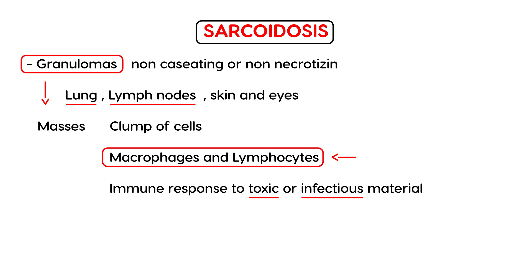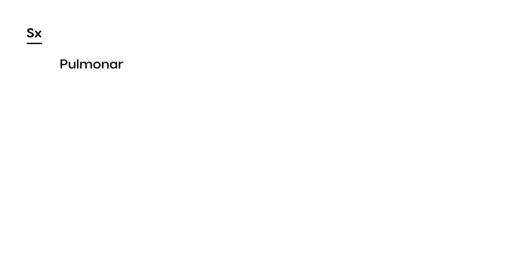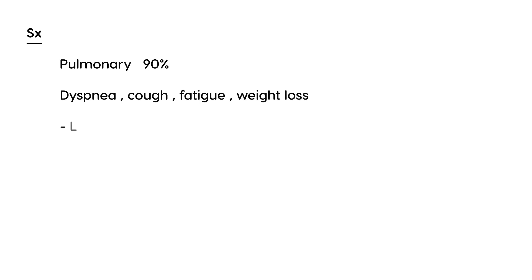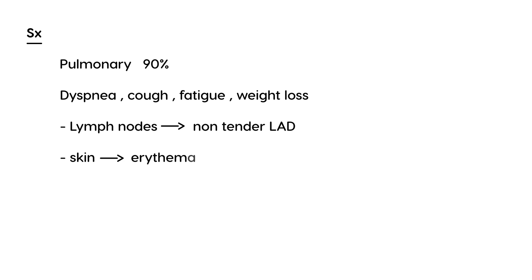When these granulomas develop they cause symptoms related to the affected organs. The most common symptoms are pulmonary, since the lungs are most commonly affected — about 90% of sarcoidosis cases have pulmonary symptoms including difficulty breathing and cough. Patients can also have fatigue and weight loss. Because lymph nodes are affected, you can find non-tender lymphadenopathy on physical exam. Skin involvement produces a rash called erythema nodosum, and eye involvement causes uveitis.